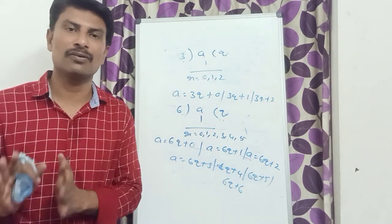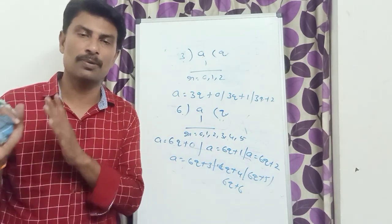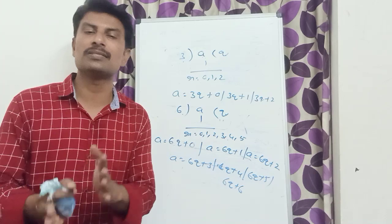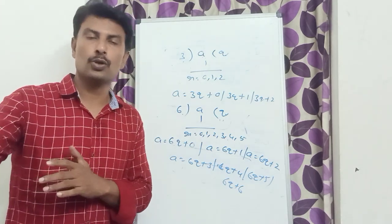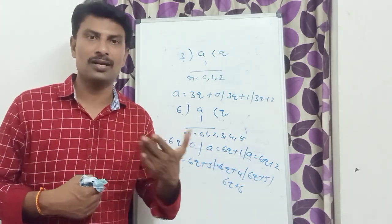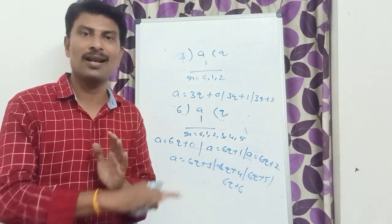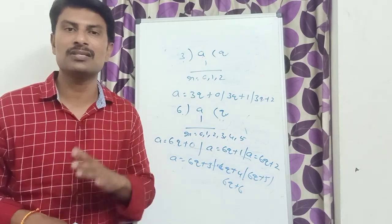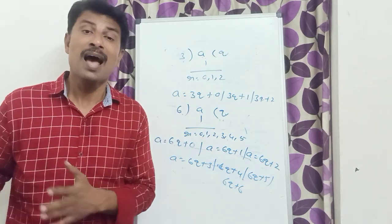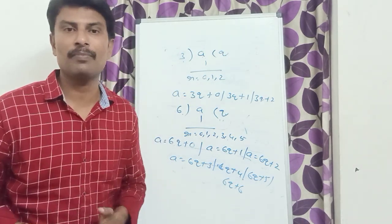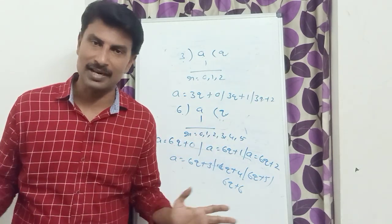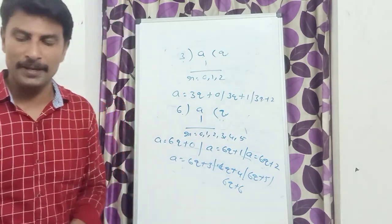Dividend is equal to divisor into quotient plus remainder. If you divide any integer by an integer, we get another two values which are in the name of quotient and remainder, and the relation between them is A is equal to BQ plus R, with the condition that remainder is always less than the divisor. That's it. Thank you.